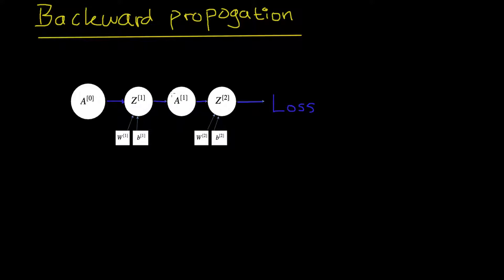Now that we want to do the calculations for backward propagation, which is really what the neural network learns from, we start by moving from back to the front. Our goal is to compute this gradient first, but really we want to calculate the gradients for the weights and the biases. To get to that point, we need to start at the loss with respect to this node.